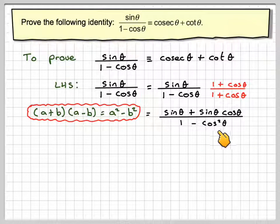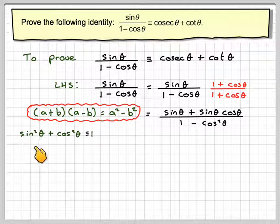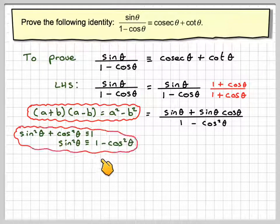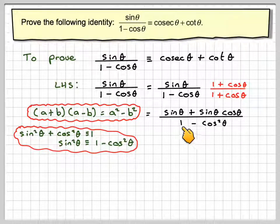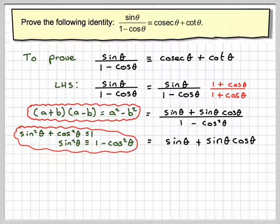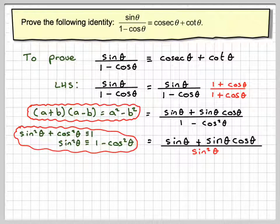Now we recognise that 1 minus cos squared theta comes from the identity sine squared theta plus cos squared theta equals 1, and therefore sine squared theta is equivalent to 1 minus cos squared theta. So we replace the denominator with sine squared theta. On the top we have sine theta plus sine theta cos theta, and on the bottom we now have sine squared theta.